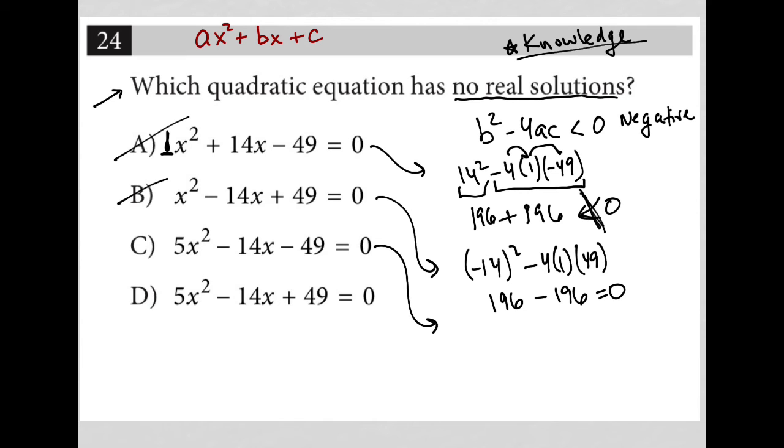For choice C here, B squared would be negative 14 squared, minus 4 times A is 5, times C is negative 49. And again, I can tell you that's going to be wrong because of the negative signs here. It's going to turn into positive signs. So this is again, going to just be a positive value, basically 20 times 49. And this is our positive 196. So there's just no chance that that's less than zero, right? It cannot be less than zero because it's positive. So C is gone.